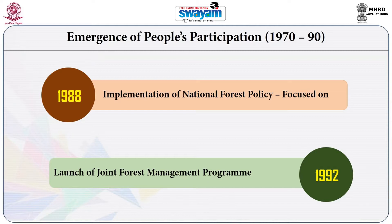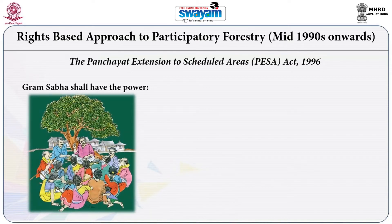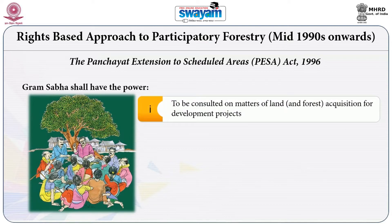Communities are not just beneficiaries participating in forest management plans drawn up by the forest department; they are supposed to exercise collective rights of decision making. In this rights-based approach, two specific acts are of great significance. The first is the Panchayat Extension to Scheduled Areas Act, or PESA Act of 1996, which empowered the Gram Sabha, entailing that the village council would have the power to be consulted in matters of forest governance.